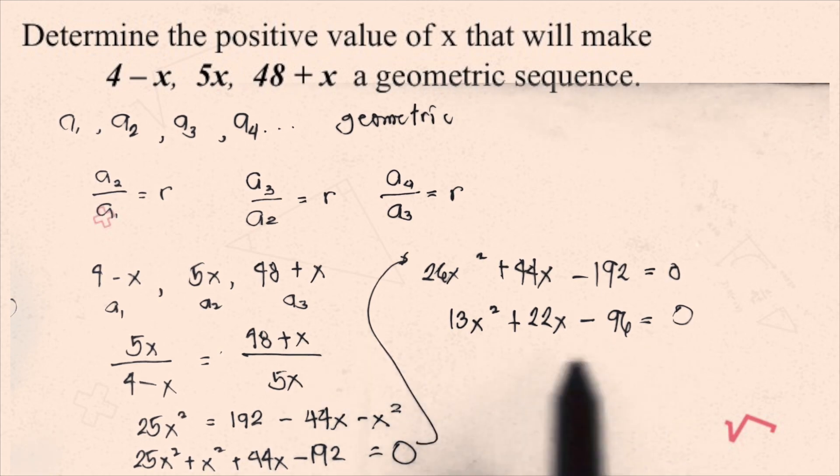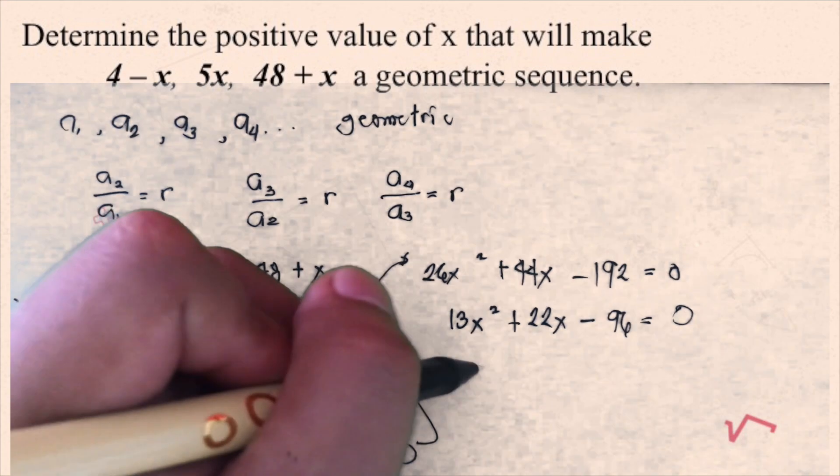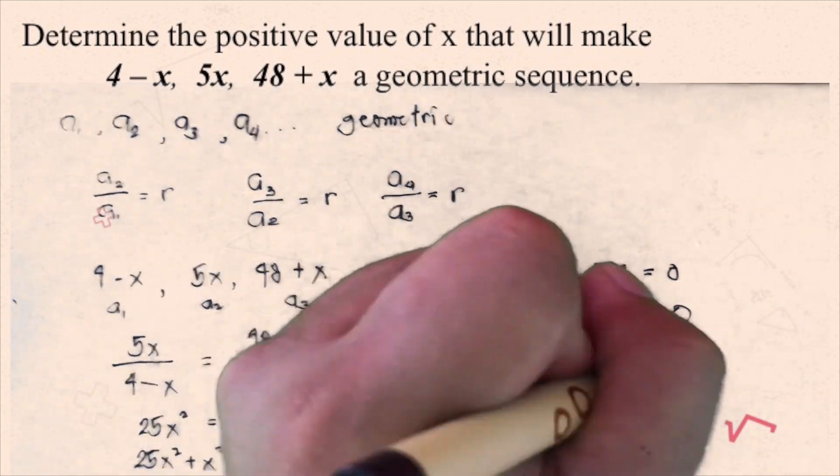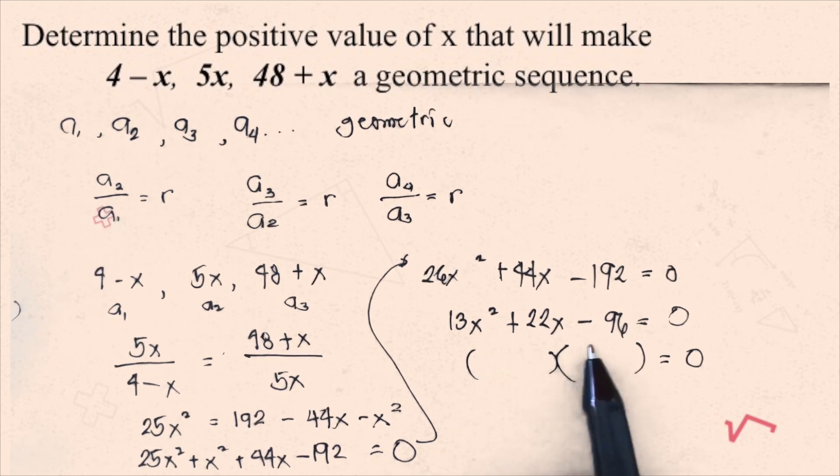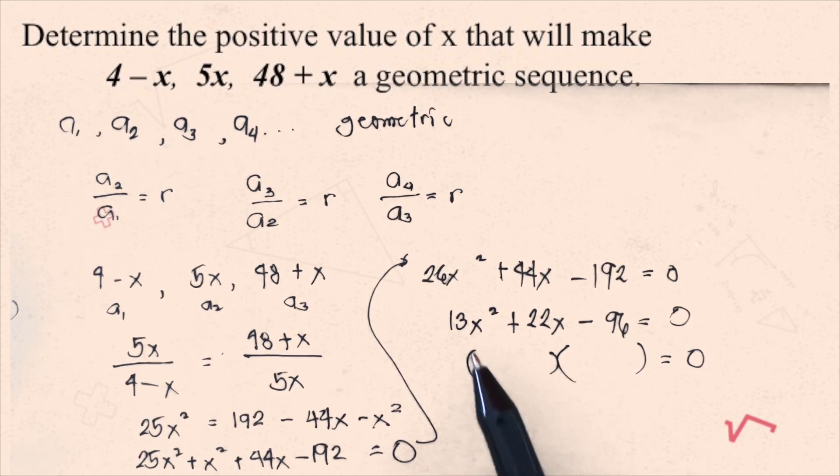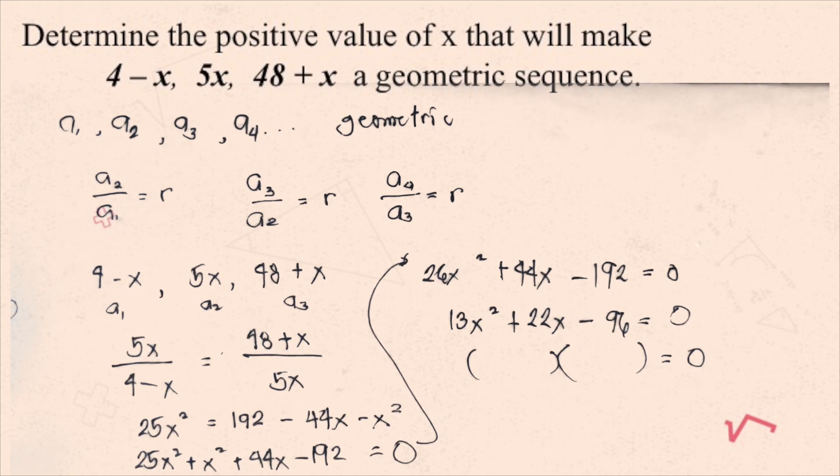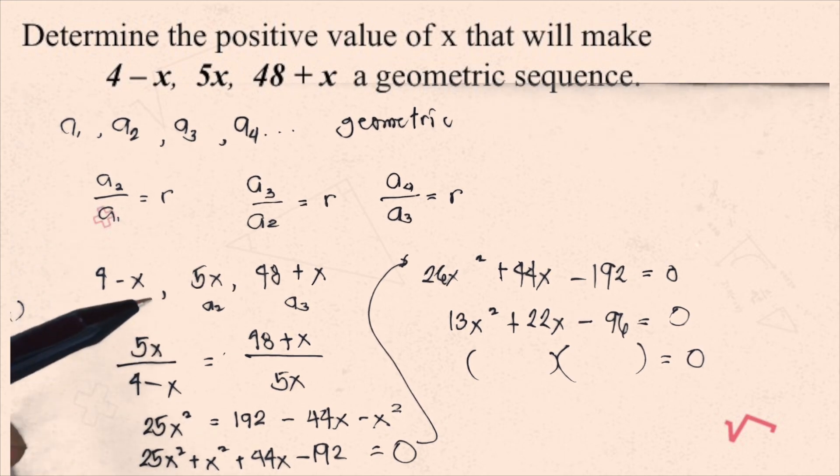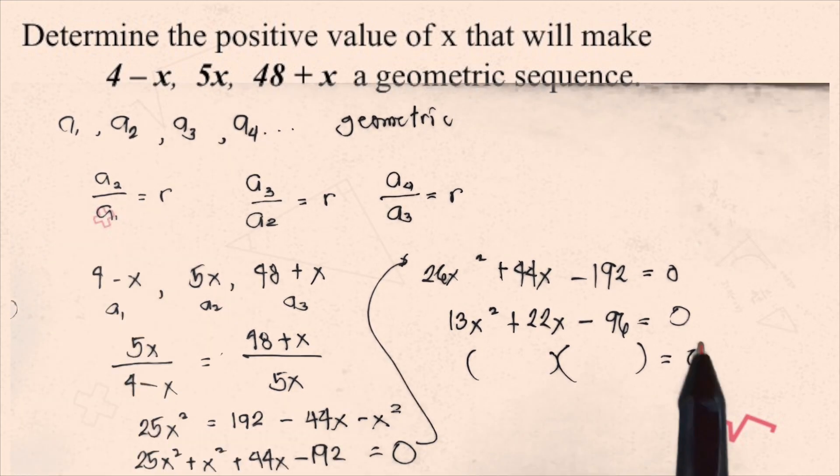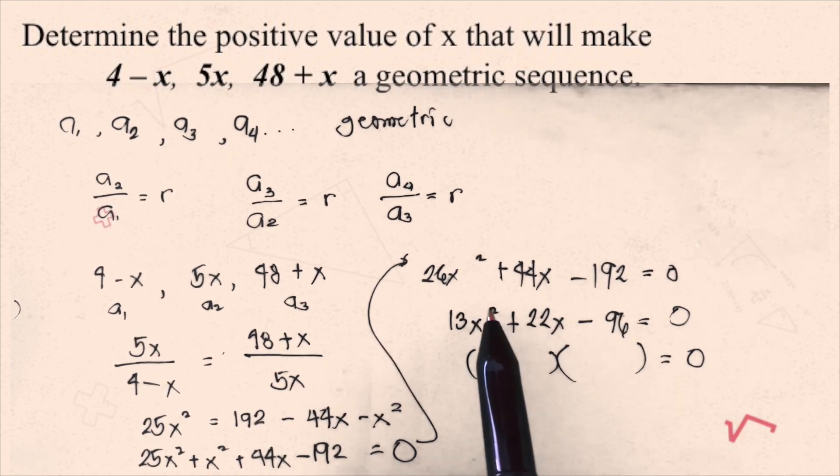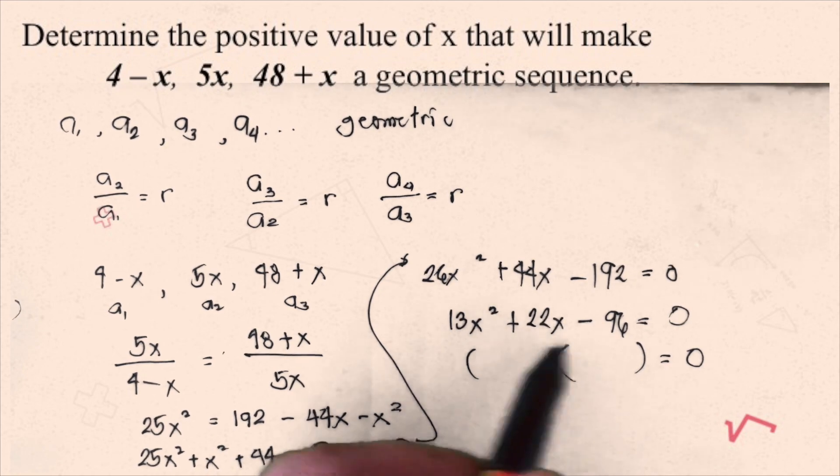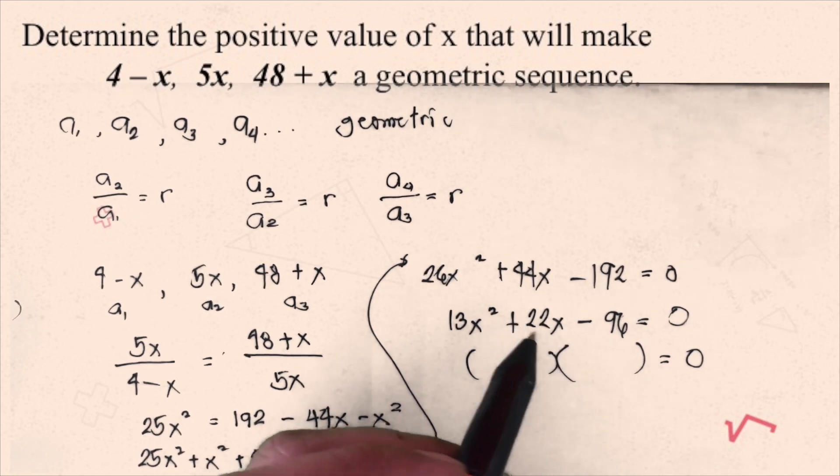So, we factor this now to get the two factors equals 0. By trial and error, the easier way to factor this is by trial and error. And the factors, what must be the factors of 96 and also 13x squared that when you combine by FOIL method, the answer is positive 22?